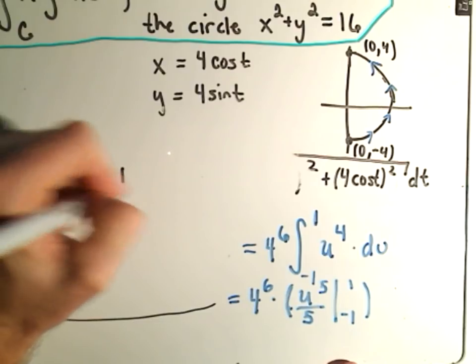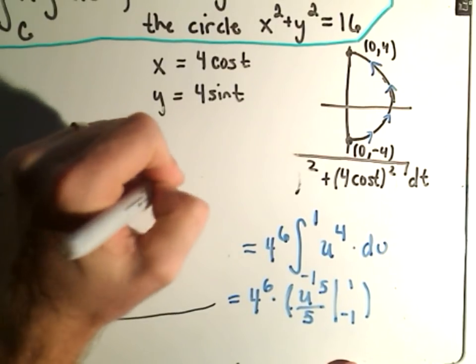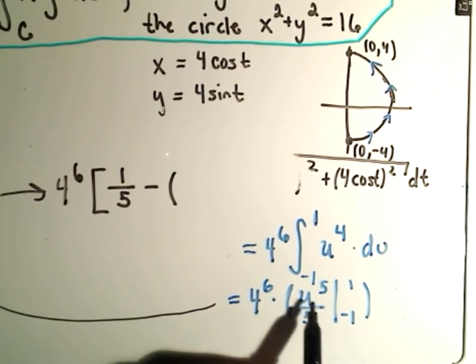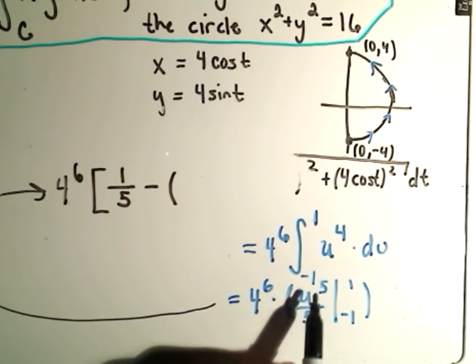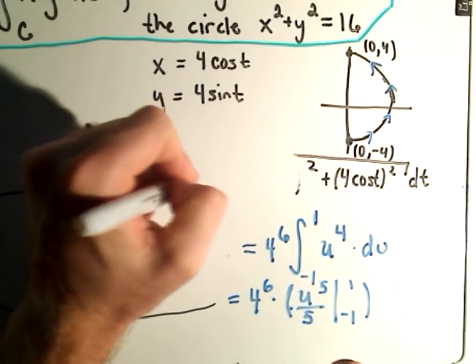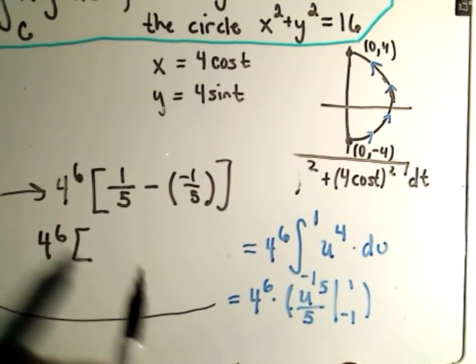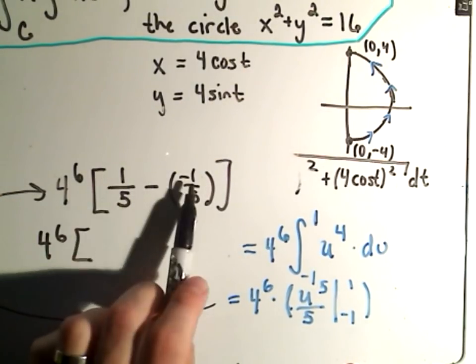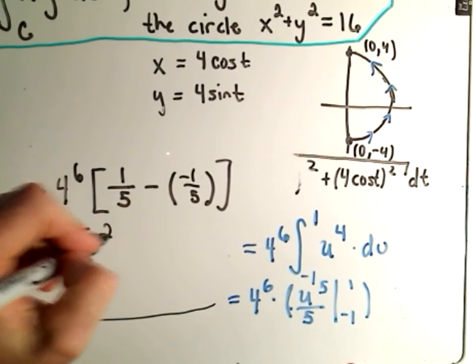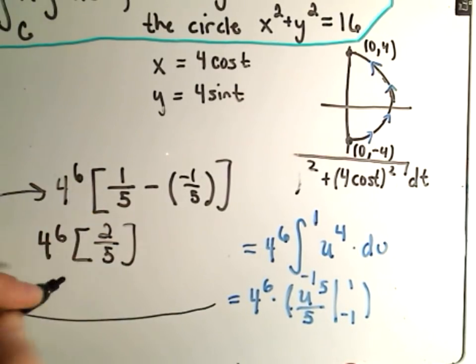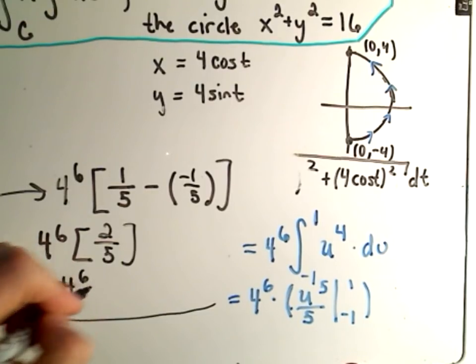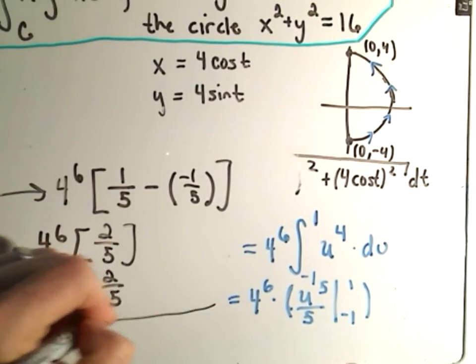If you plug in 1, we'll get 1/5 minus the lower limit. If I plug -1 in for u, I'll get (-1)^5, which is -1/5. So I get 4^6. Inside the brackets, I'll get 1 minus -1, or positive 2/5. And you could multiply this out. I'm going to leave it alone. So it says your final answer is 4^6 times 2/5. That'll be the value of that particular line integral.